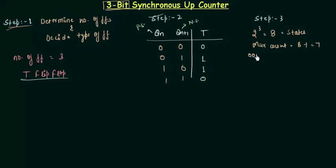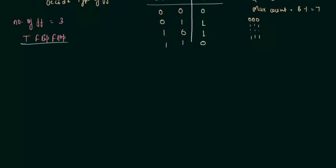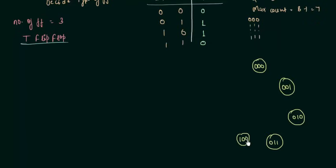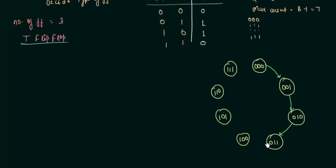Our count will start from 000 and end at 111. The 8 states are: 000, 001, 010, 011, 100, 101, 110, and 111 — the maximum count. Since we are making an up counter, counting goes 0, 1, 2, 3, 4, 5, 6, 7, and back to 0. This is the state diagram, and by using it we will make the circuit excitation table.